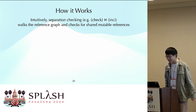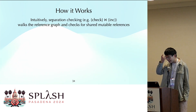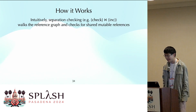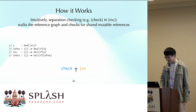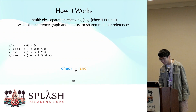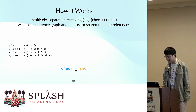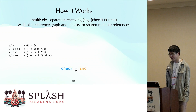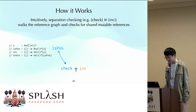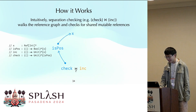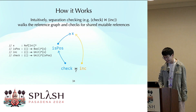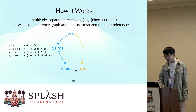Separation checking works intuitively by walking the reference graph of both sides to determine whether there are shared mutations. Taking the previous separation check as an example: to find whether check and ink can be established as separate, we inspect the capturing type of 'check,' which has a reference to 'isPositive,' and 'isPositive' refers to X. On the other side, 'ink' also refers to X. There is a conflict — we reject this check, and a type error is issued for this application.